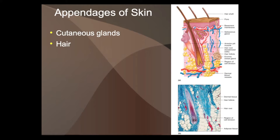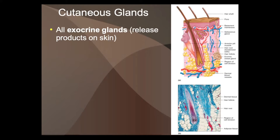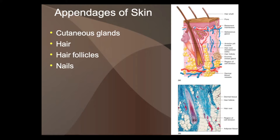Hair comes off the skin, so that's an appendage of the skin. Hair follicles are basically the part that makes the hair — it's skin cells around the hair that create new cells. Nails are mostly protein, just keratin. Both nails and hair are really not many cells at all; they're really just a bunch of protein bound together.